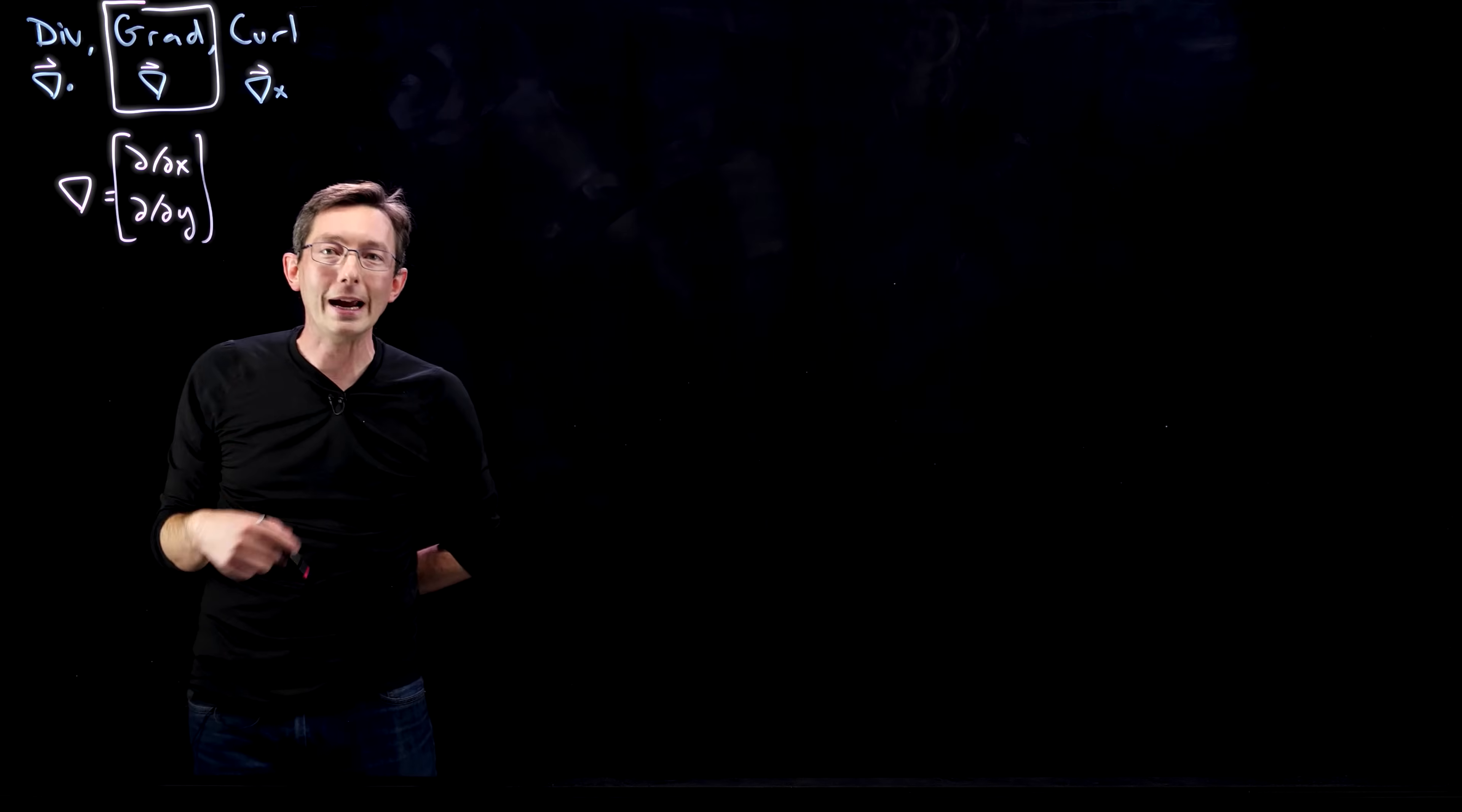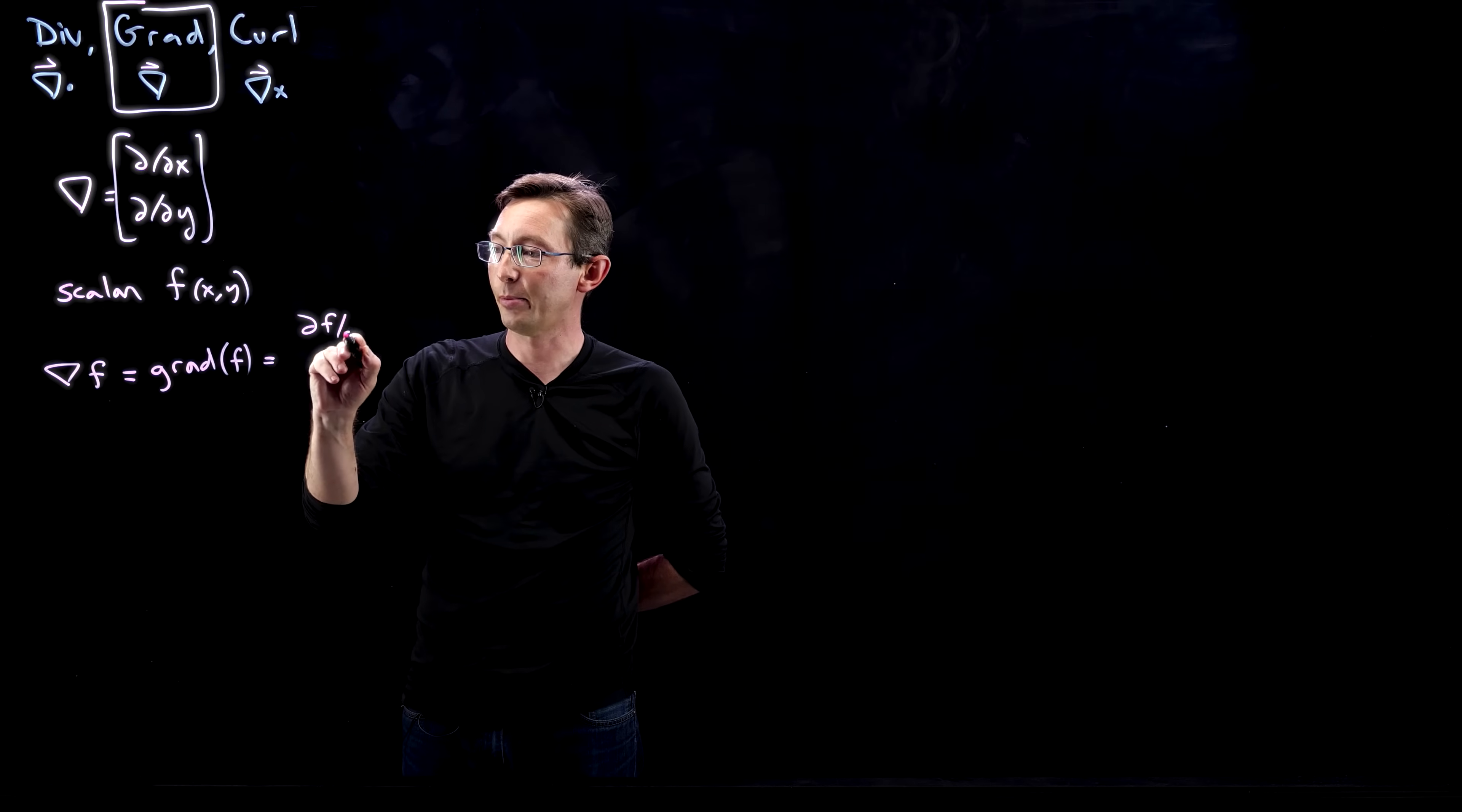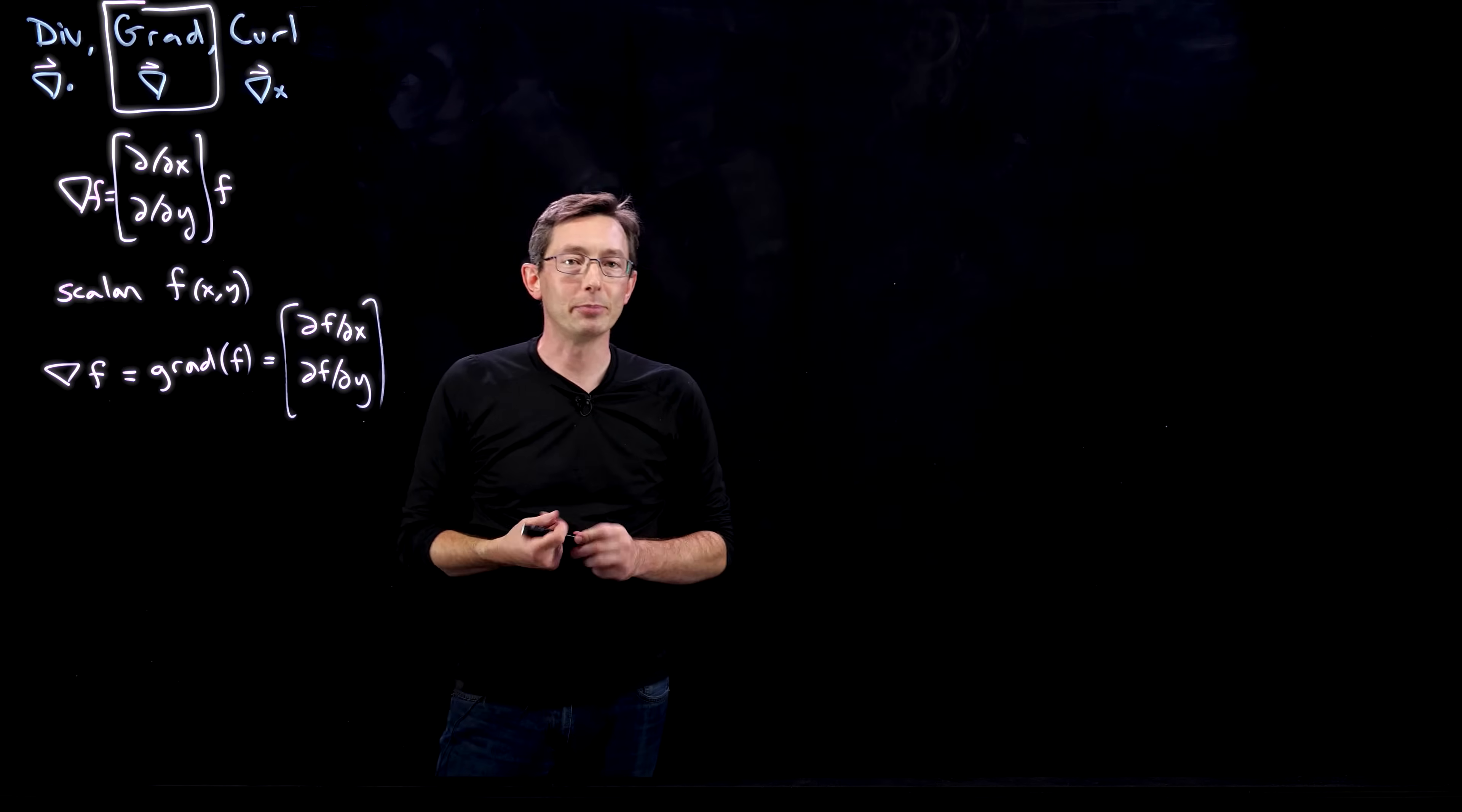The gradient of a scalar function f—if I have some scalar f(x,y), just recall that the gradient of f, sometimes called grad of f, is a vector field. It takes a scalar and creates a vector field: ∂f/∂x, ∂f/∂y. When you hit grad with an f, you literally just apply the partial ∂/∂x to f and the partial ∂/∂y to f, and you have those in the two components of your vector output. Very simple to compute.